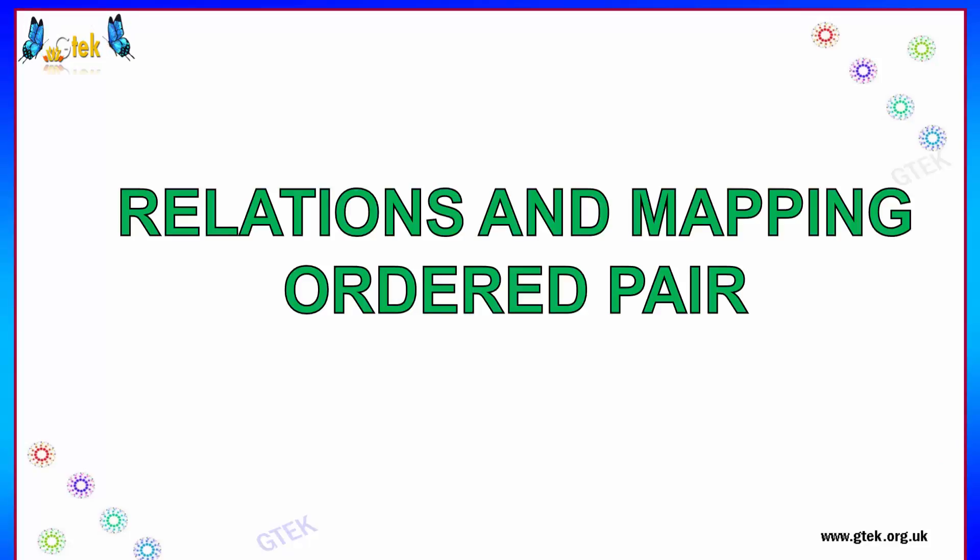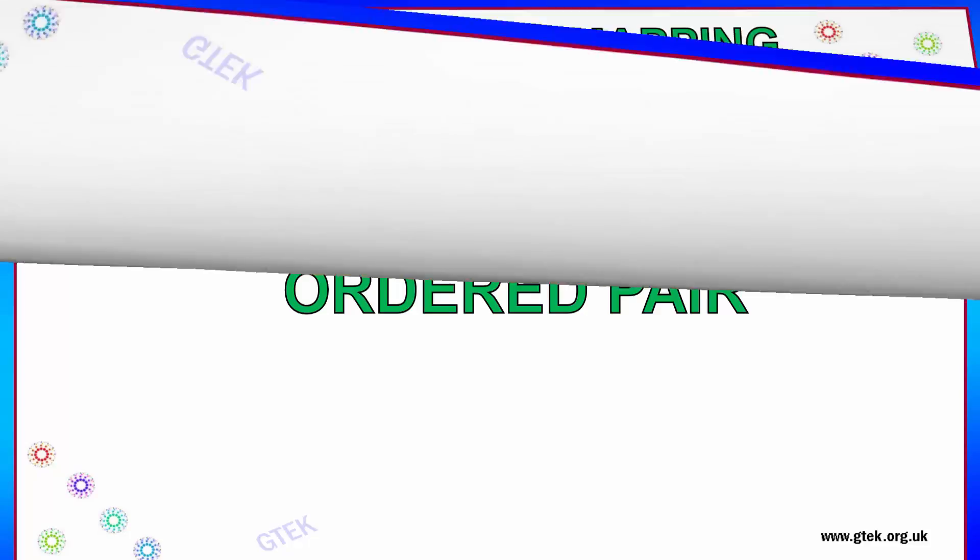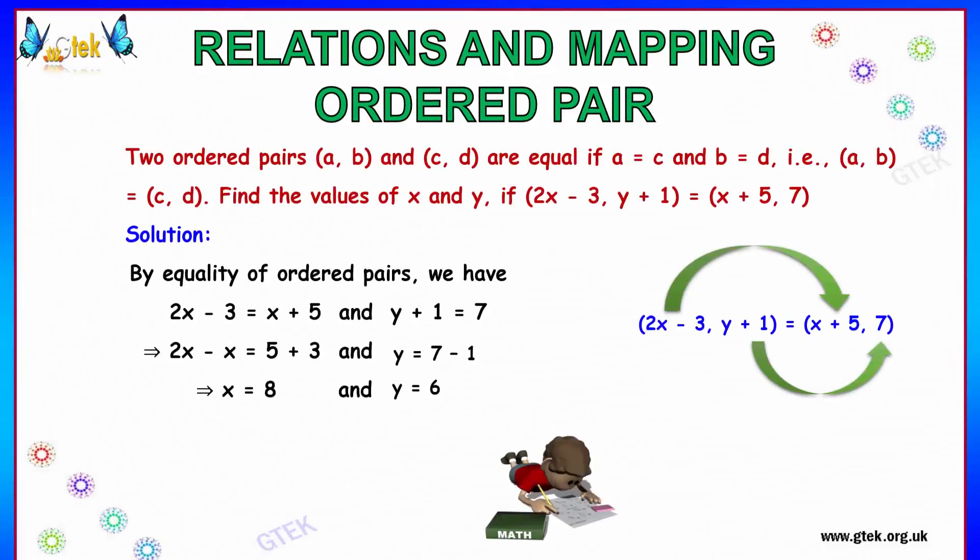Let's see relations and mappings in ordered pairs. There are two ordered pairs (a, b) and (c, d), and they are equal, so a is equal to c and b is equal to d.